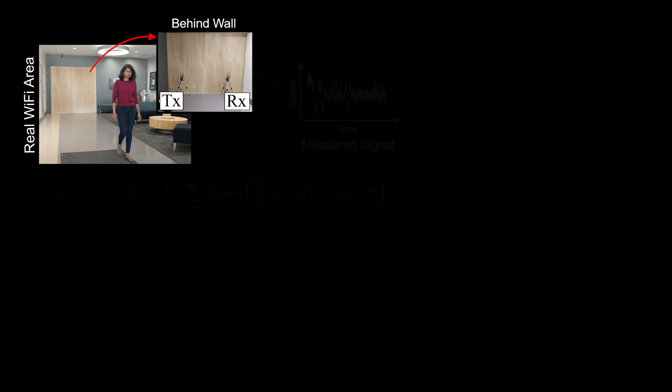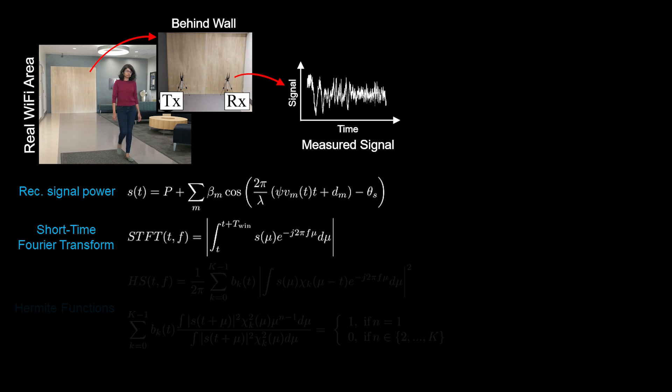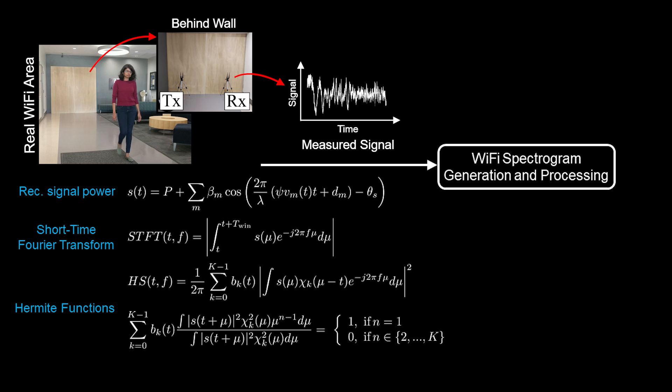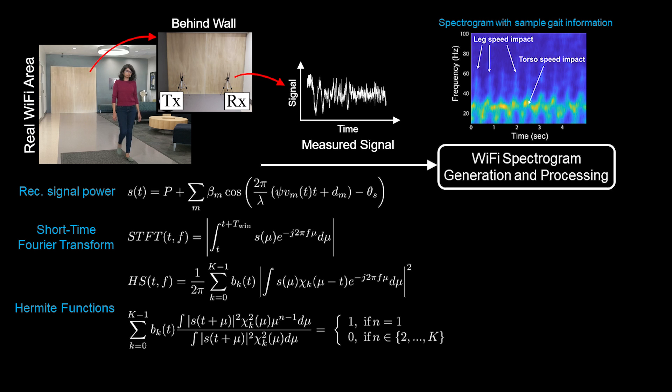Next, consider this area where a person is walking. A pair of Wi-Fi transceivers are inserted outside of the area, where the receiver measures the magnitude of the received signal. We then use a combination of short-time Fourier transform and Hermite functions in order to get the spectrogram of the received signal. The spectrogram carries the frequency-time content of the wireless signal, which implicitly carries the gait information of the person.